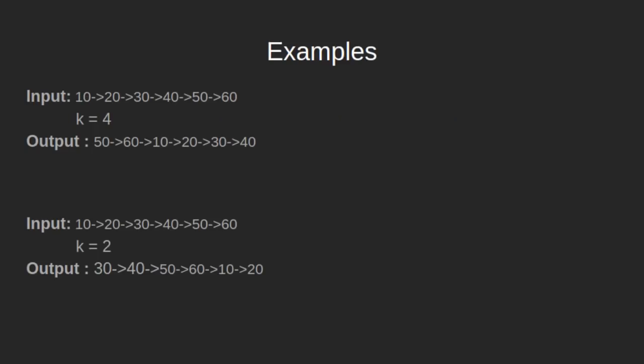Let's see some examples to demonstrate the above problem. In the first example, we have given a linked list 10, 20, 30, 40, 50, 60 and value of k as 4, meaning we have to rotate the linked list 4 times counter-clockwise. After the rotations, the linked list becomes 50, 60, 10, 20, 30, 40.